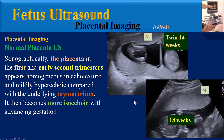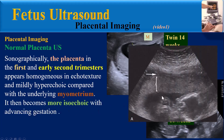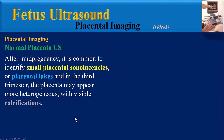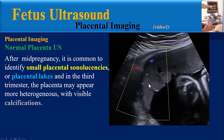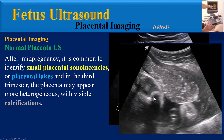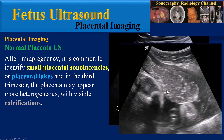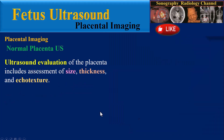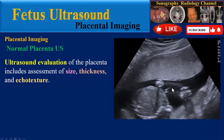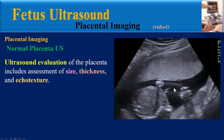It then becomes more isoechoic with advancing gestation. After mid-pregnancy, it is common to identify small placental sonolucencies, also known as venous lakes, and in the third trimester the placenta may appear more heterogeneous with visible calcifications. Ultrasound evaluation of the placenta includes assessment of the size, thickness, and echo texture.